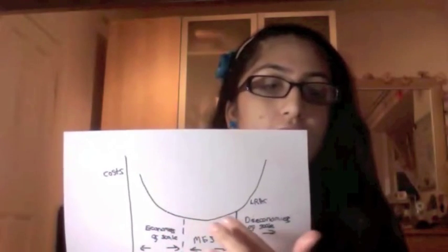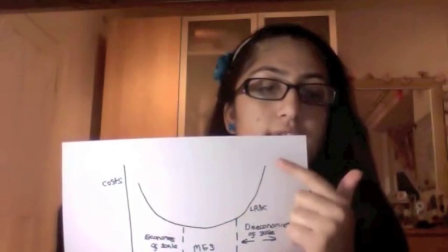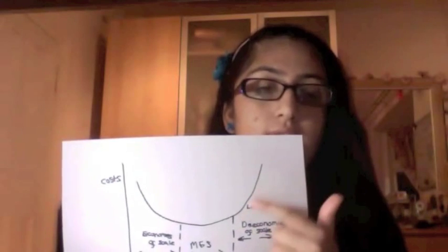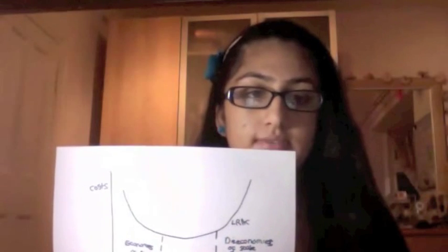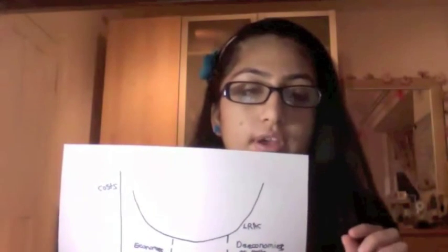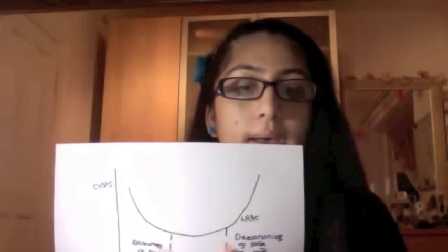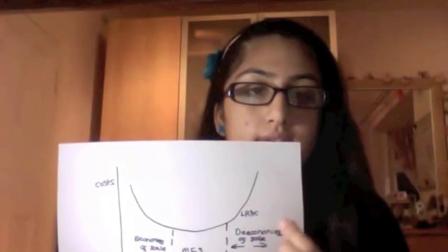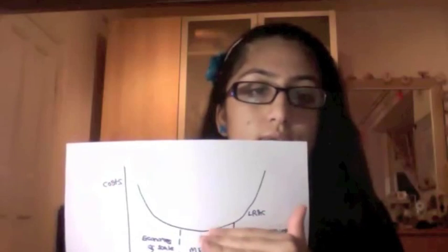This is the part of the curve firms want to remain at, where costs are low. If they get so big and try to increase output beyond point B, costs start to rise — that's diseconomies of scale. Internal economies and diseconomies move a firm along the curve, while external economies shift the entire curve downward and external diseconomies shift it upward.